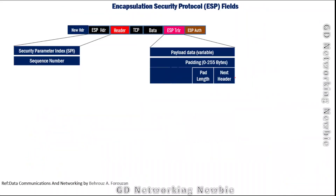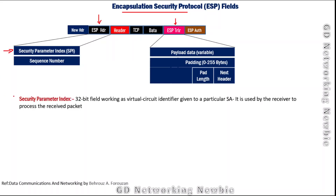After the Authentication Header, let's look at the fields in the ESP — Encapsulating Security Payload — header. The ESP consists of an ESP header and an ESP trailer. In the ESP header, the first field is the Security Parameter Index, exactly like in the Authentication Header — it is the identifier for the virtual circuit established between the two points.